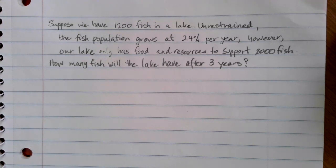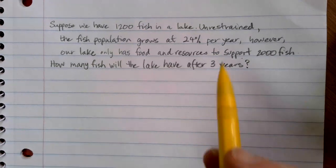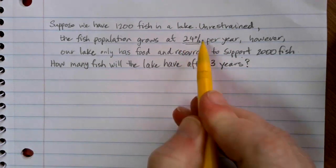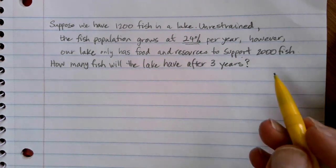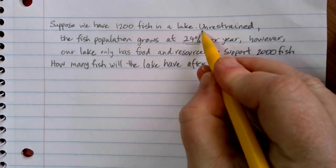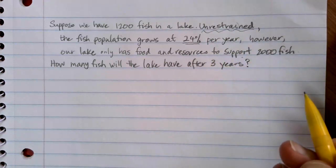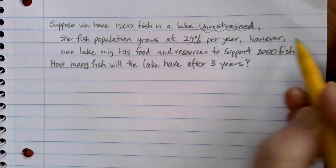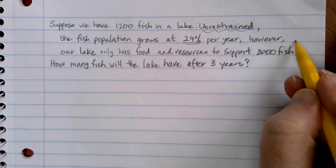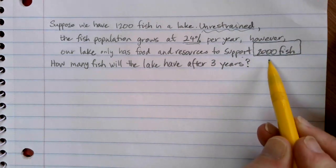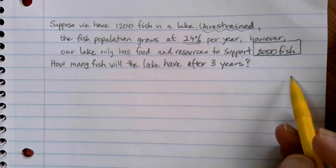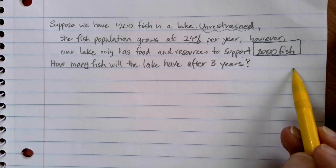Okay, the first thing that we need to do, of course, is to identify which type of growth model we're looking at. This does have a percentage value listed here, so there is a percentage growth rate. However, that growth rate is only when it's unrestrained and our lake only can support 2,000 fish. So it can't grow forever. It's going to start tailoring down here and leveling off once we get close to 2,000 fish.